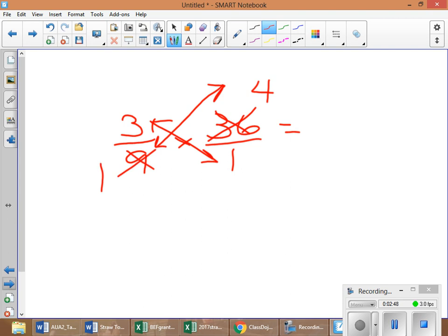So, now, when I multiply straight across, I have 3 times 4, and that equals 12. And 1 times 1 equals 1. And my answer equals 12. Now, for those of you that are like, well, what if I do it the other way? Okay.